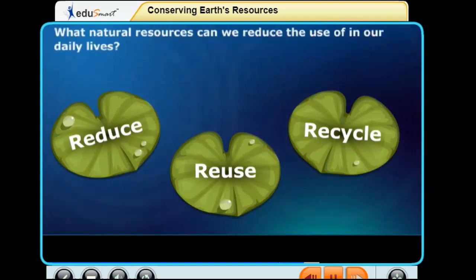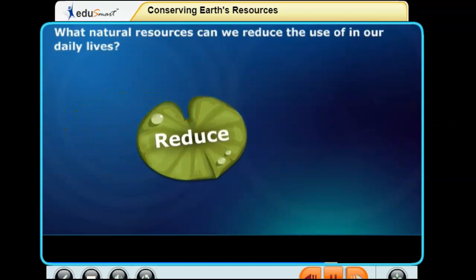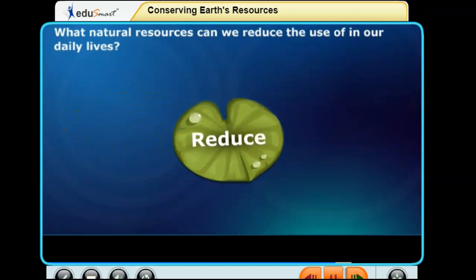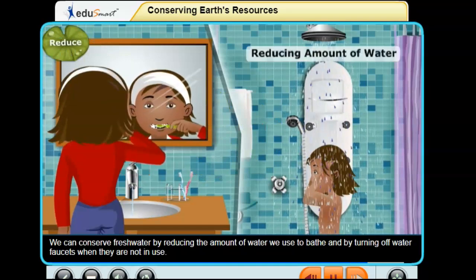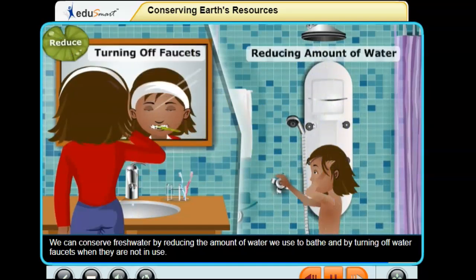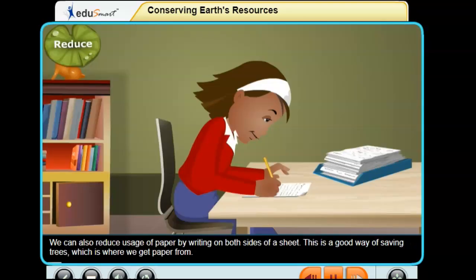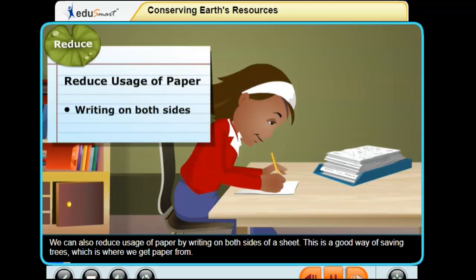What natural resources can we reduce the use of in our daily lives? We can conserve fresh water by reducing the amount of water we use to bathe and by turning off water faucets when they are not in use. We can also reduce usage of paper by writing on both sides of a sheet.